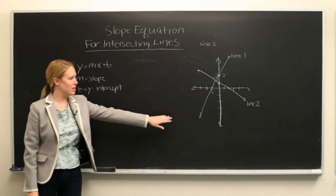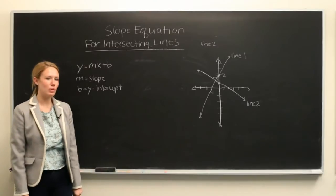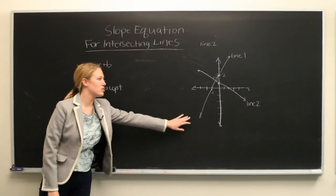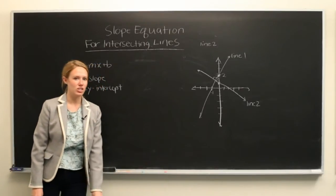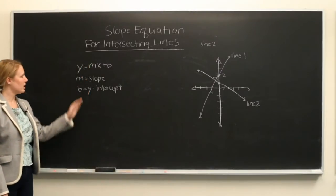We have a Cartesian plane to the right with an x and y axis and two lines that are intersecting at 90 degrees of each other.